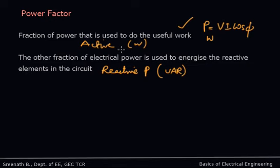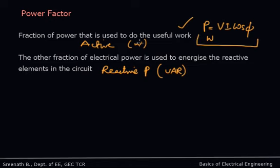At this point you can understand that some fraction of total power is used to do useful work — it can be dissipated as heat in the resistor or converted into a useful form of energy. That particular fraction of power is known as active power, and its fraction of the total is defined by the power factor of the circuit.